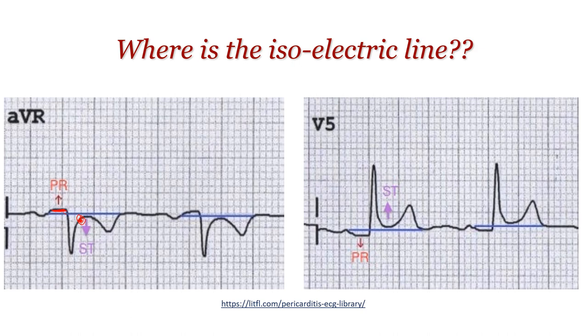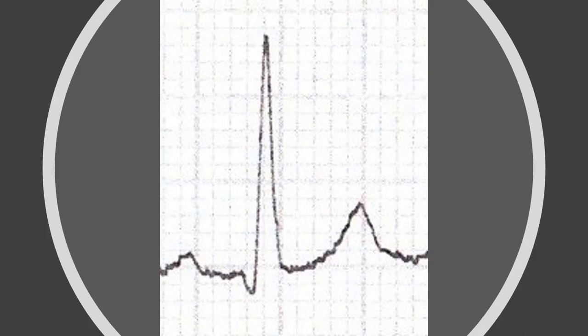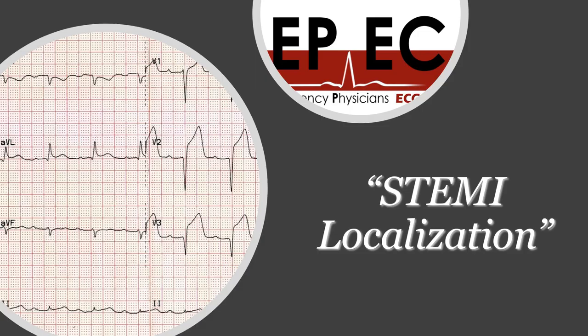If you call something an ST depression, I would argue: why not PR elevation? The only area in the ECG with no electrical activity at all is between two complexes — after the T wave and before the next P wave. So your baseline should be the TP segment. If you apply this correctly, what you thought was ST elevation using the PR segment as baseline is actually ST depression with a PR depression — a very important distinction.